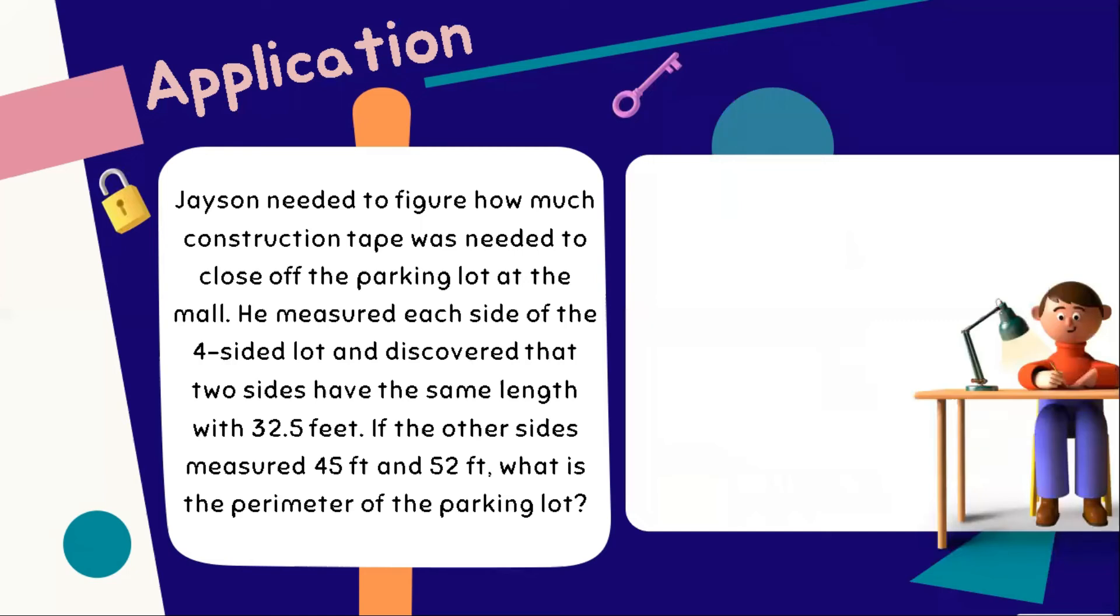Let's proceed to the second item under the application part. Jason needed to figure how much construction tape was needed to close off the parking lot at the mall. He measured each side of the four-sided lot and discovered that two sides have the same length with 32.5 feet. If the other sides measured 45 feet and 52 feet, what is the perimeter of the parking lot? We can apply this given formula to solve for the perimeter of this given polygon.